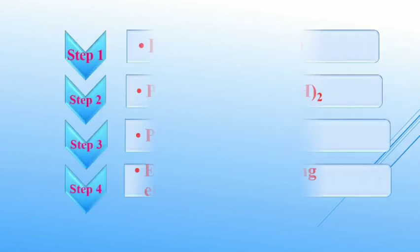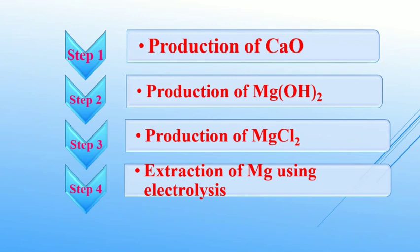Now let us move on to the main steps of Dow process. There are four main steps in this process. Step 1 is production of calcium oxide and step 2 is production of magnesium hydroxide and the main aim of step 3 is production of magnesium chloride. And the fourth and final step is extraction of magnesium using electrolysis.